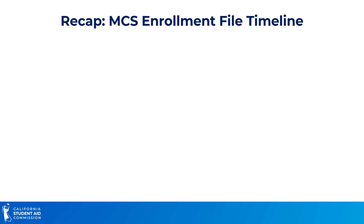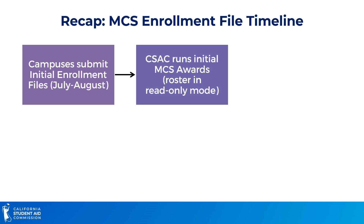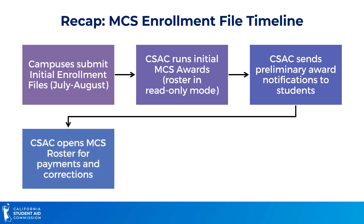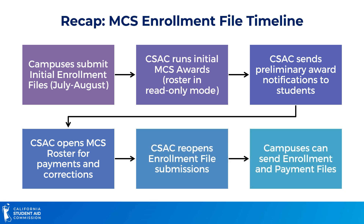To recap, the MCS enrollment file timeline begins when campuses submit their initial enrollment files prior to the fall term, usually sometime in July or August. Then CSAC runs initial MCS awards using those enrollment files. CSAC will then send preliminary award notifications to students and open the MCS roster for payments and corrections. Enrollment file submissions are also reopened so schools can continue sending subsequent enrollment and payment files.